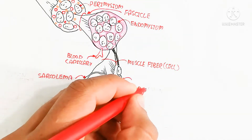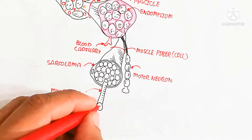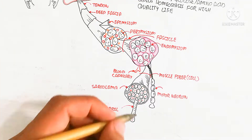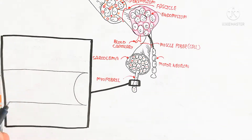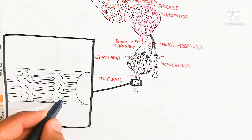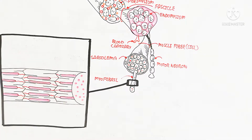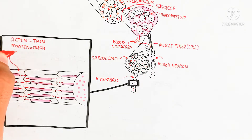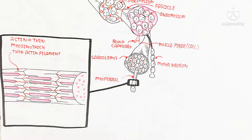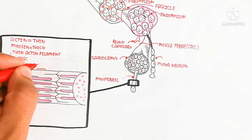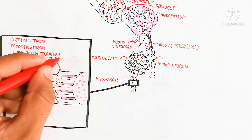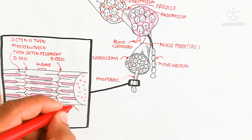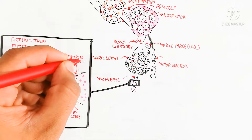Blood capillaries and neurons are present — specifically the motor neuron, which is very important for the neuromuscular junction for muscle contraction. Here is the sarcolemma, which is the cytoplasm-like structure containing the nucleus. Many myofibrils are present within the sarcolemma, within the muscle fiber. The sarcolemma myofibril contains many sarcomeres. Actin and myosin filaments are present: thin actin filament and thick myosin filament. The muscle will move and contract.